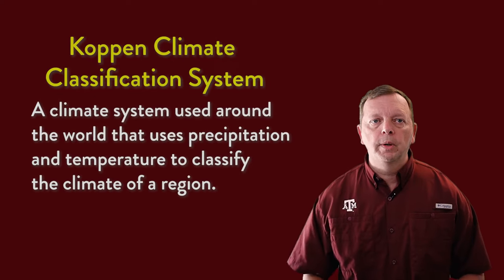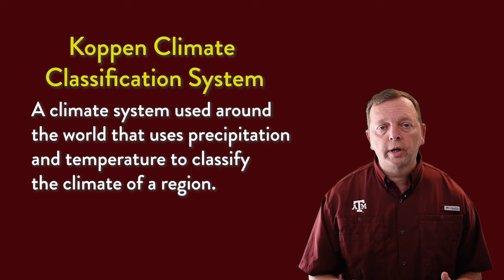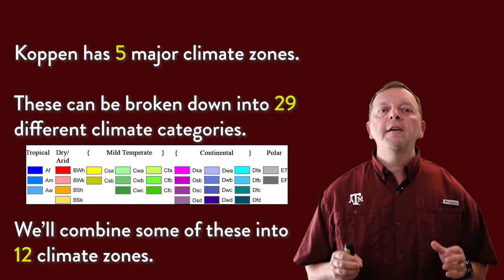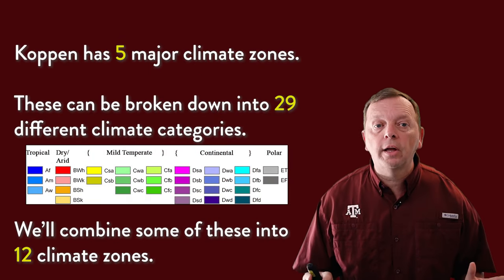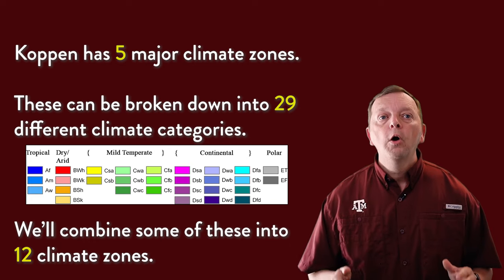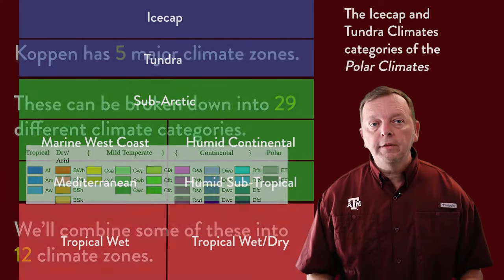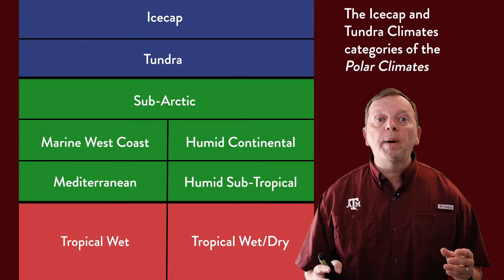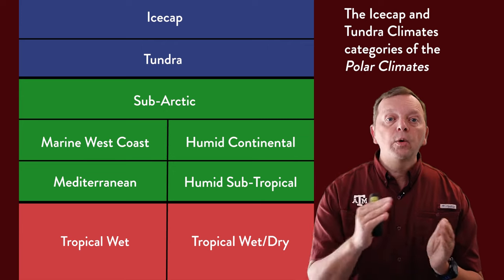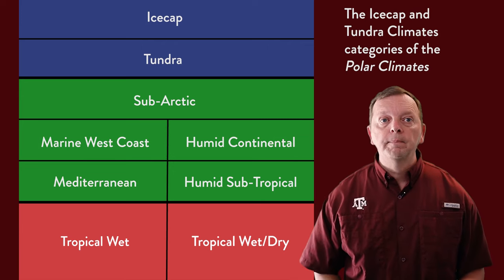Koppen gave us a system that classifies the world's climates based upon the patterns of temperature and precipitation. Comparing these two characteristics, 12 climate zones are identified. Fortunately, nine of these climate zones can be remembered by their location, latitude, and which side of a continent they fall on.